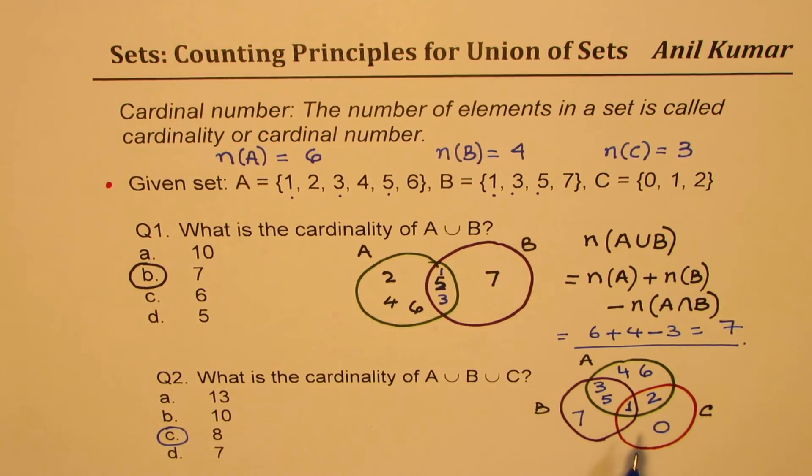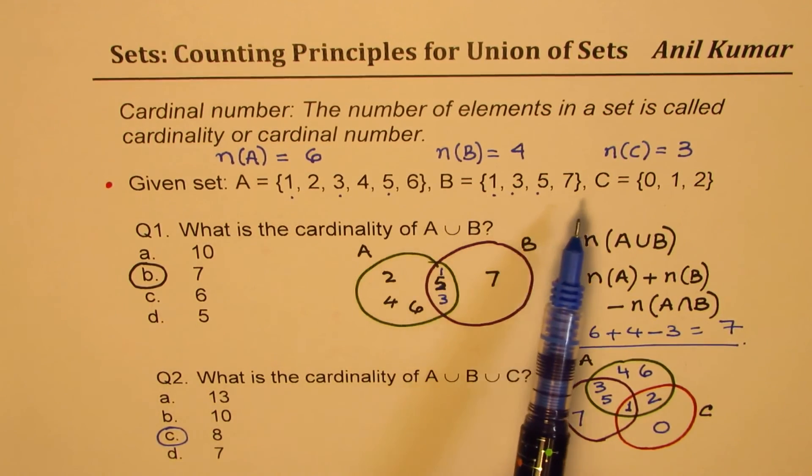It is not necessary to draw the Venn diagrams. I have drawn them to make it simpler to understand. So basically, when you're looking for union of all these sets, then don't count any number twice. That's the whole idea.